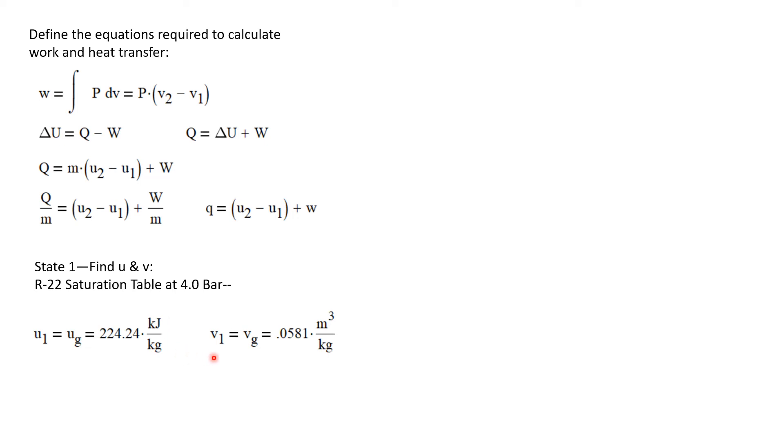In the same location of the table, we'll find v₁, which equals v_g, and we'll find that to be 0.0581 cubic meters per kilogram.